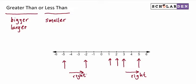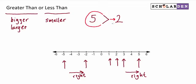How do we write all this mathematically? The greater than sign looks like this. So if we went back to our original example, we say 5 is greater than 2. The way I like to think about it is that the big end of the sign is over by the bigger number, and the small pointy end is at the small number. With negatives, we say negative 2 is greater than negative 5, because the greater number is to the right of the smaller number.